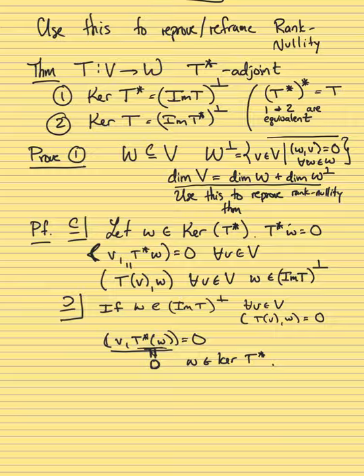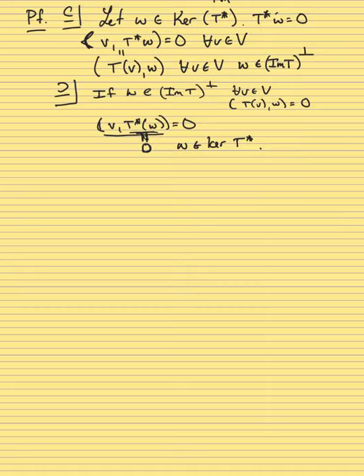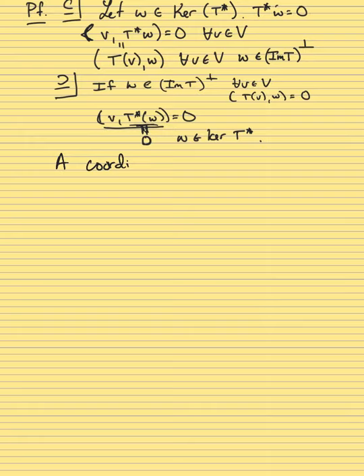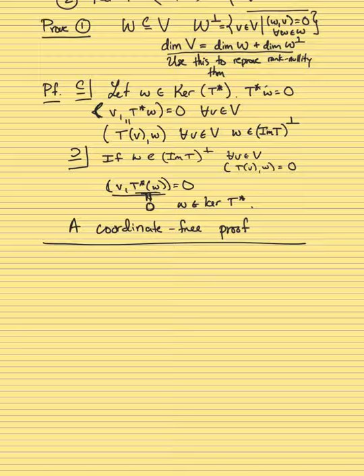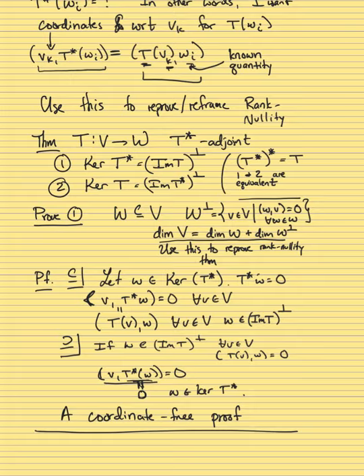So somehow it tells you more, and it's also a shorter proof. This is a coordinate-free proof — we proved something about linear transformations without ever choosing a basis for V or W. That's nice in the sense that you didn't have to do much computation. On the other hand, it's a higher level of abstraction — you're using this general formula and deriving consequences rather than computing with bases. But I claim it's better.